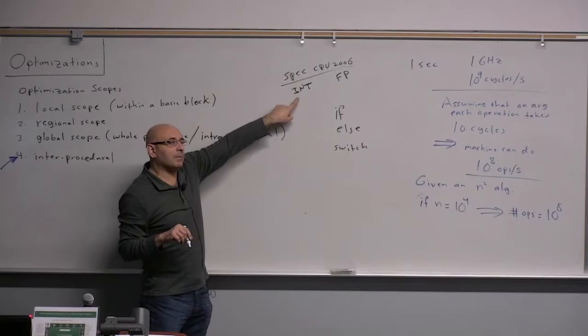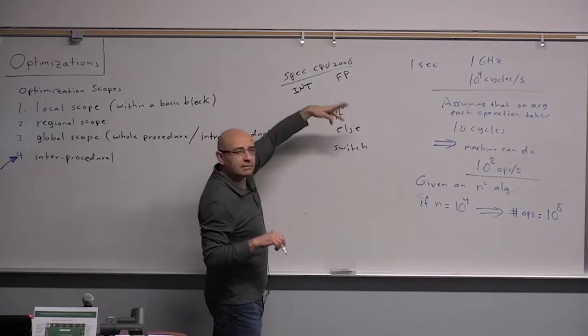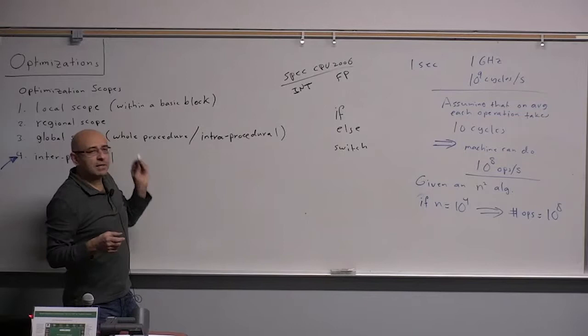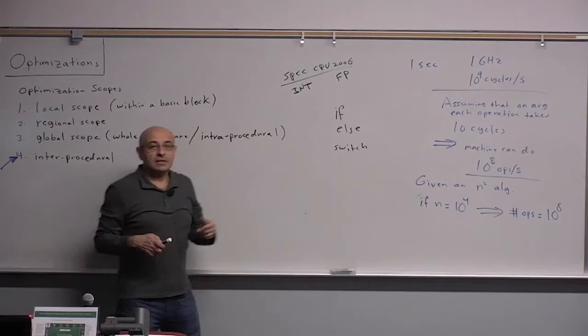The average basic block size is a few instructions — maybe 10 or even less than 10 for integer programs, and somewhat bigger for scientific programs, but the average is still not going to be 50 instructions.